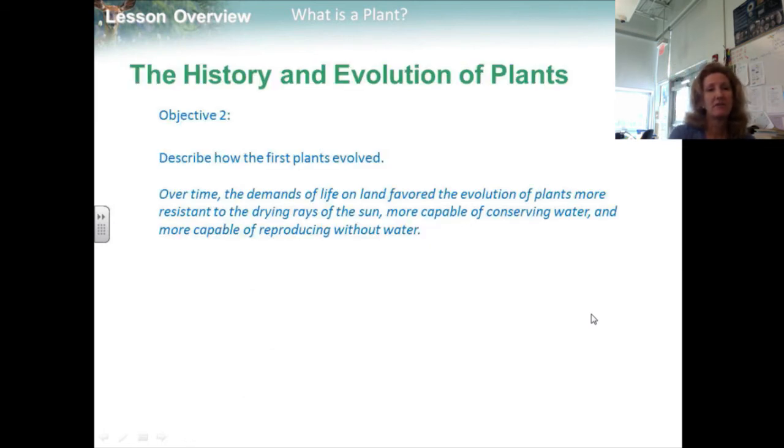So objective two is describe how the first plants evolved. Over time, demands of life on land favored the evolution of plants more resistant to the drying rays of the sun, more capable of conserving water, and more capable of reproducing without water.